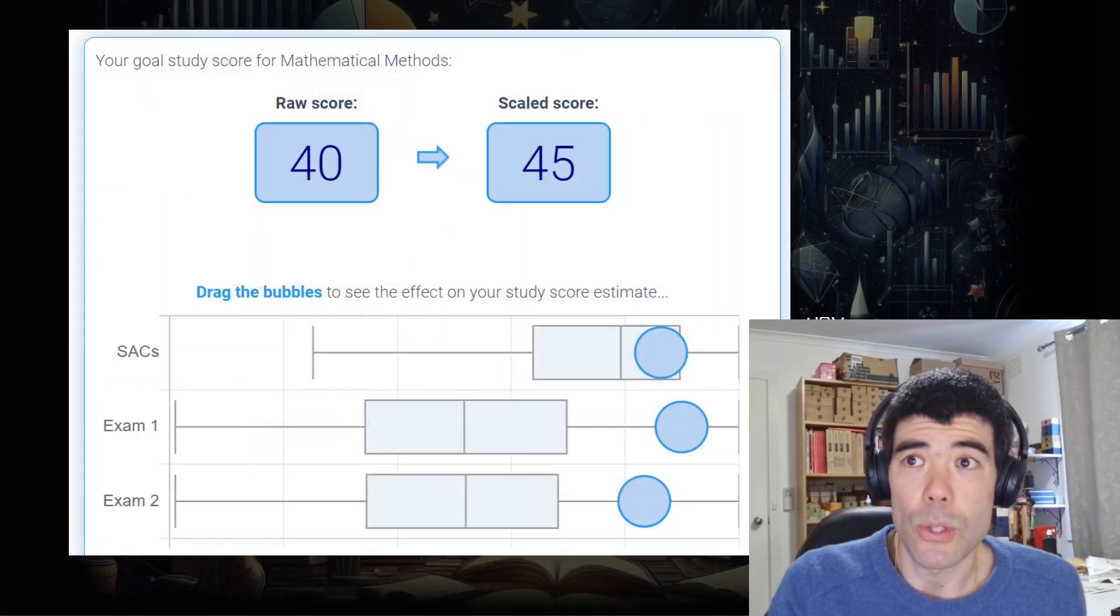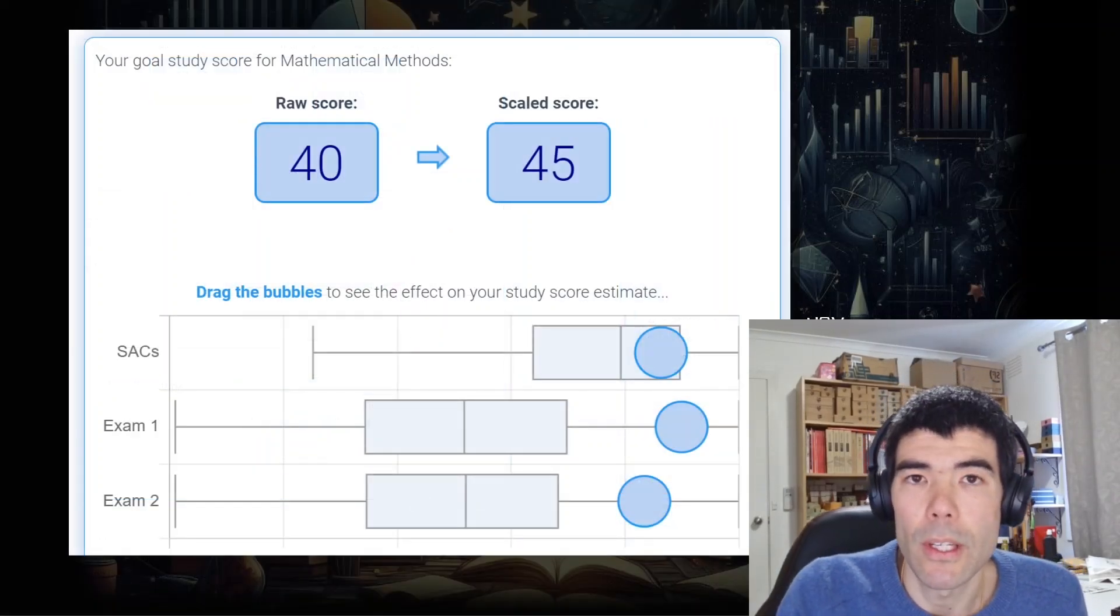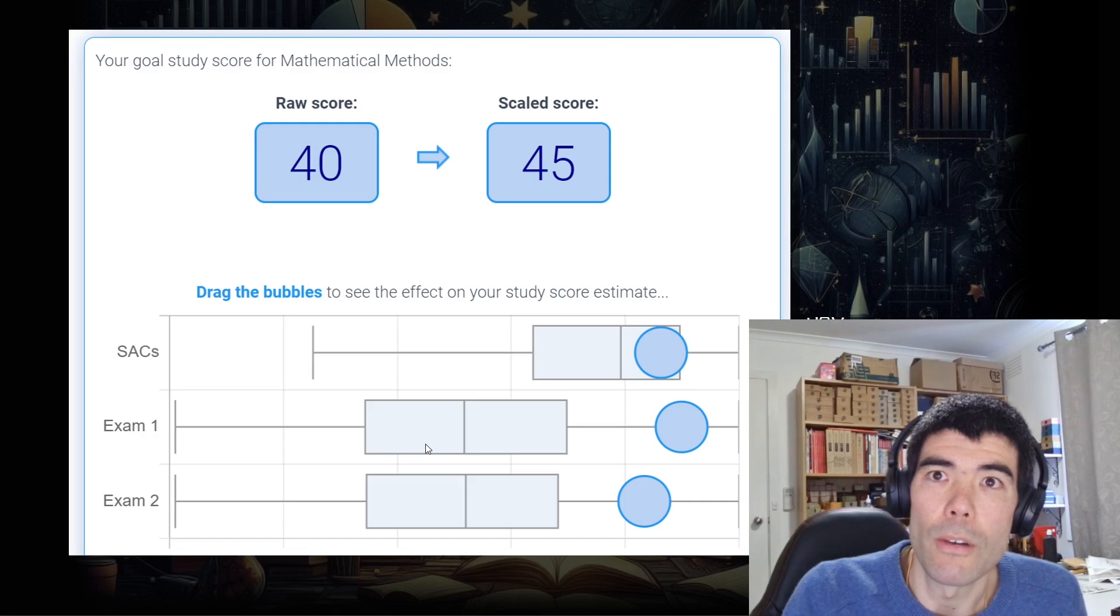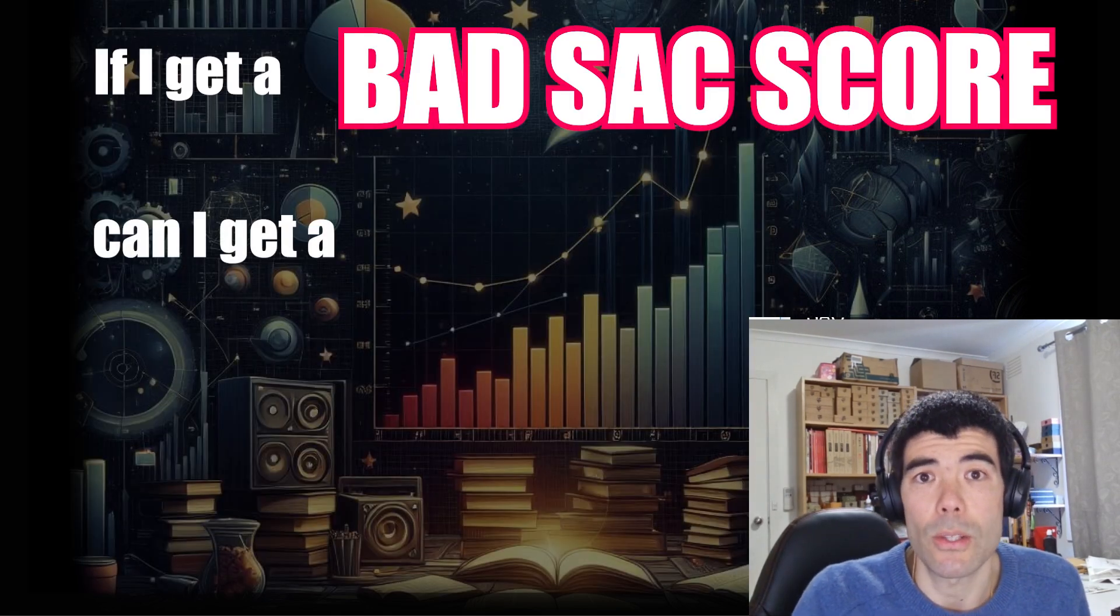Okay, so I'll leave a link to that study score calculator in the description of this video. But let's come back to that question of, if you get a bad SAC score, can you still get a good study score?